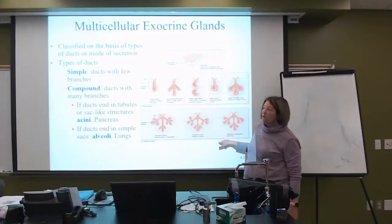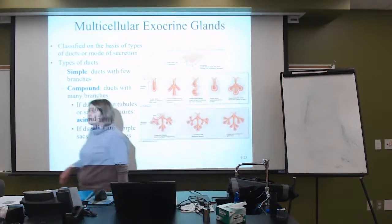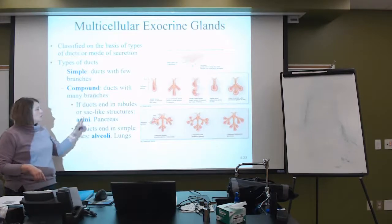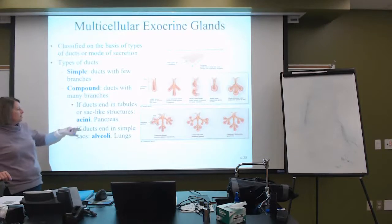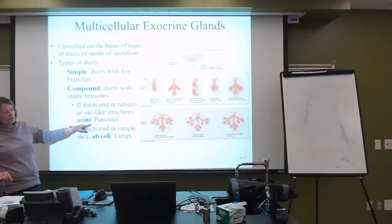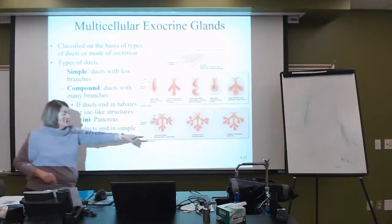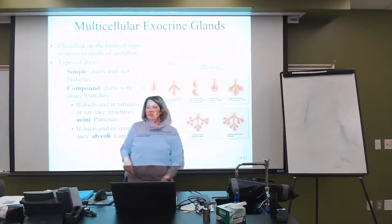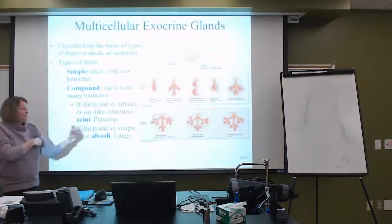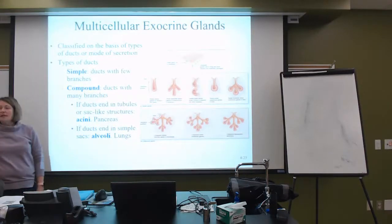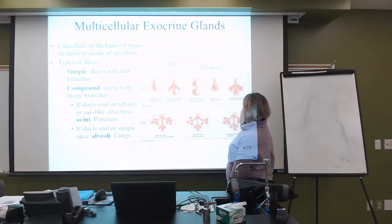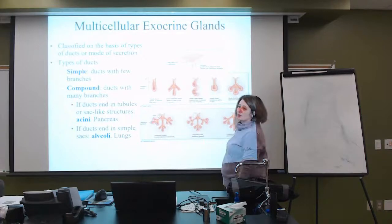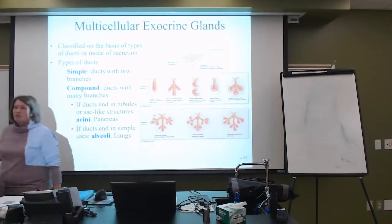There are terms to help describe structure: if the duct ends in tubules or sac-like structures, they are termed acini — for example the pancreas, which has little bubble-like structures. If they are simple rounded structures, they are termed alveoli, which just look like a grape.